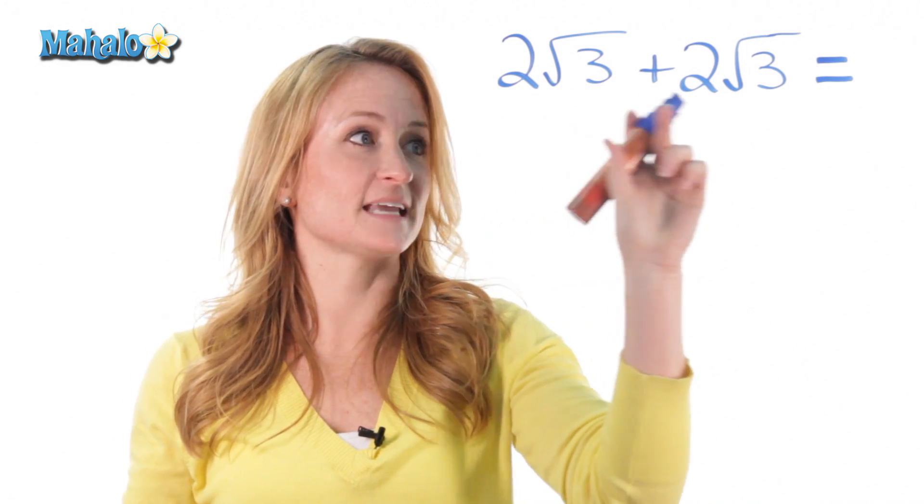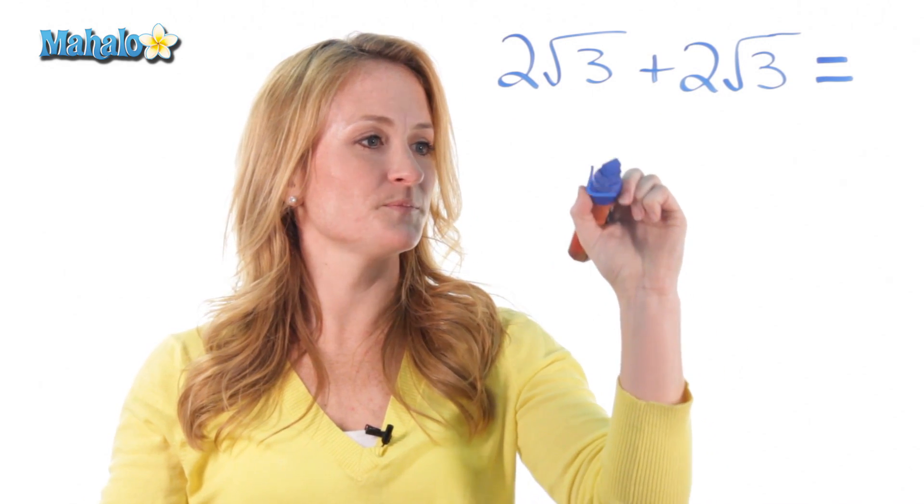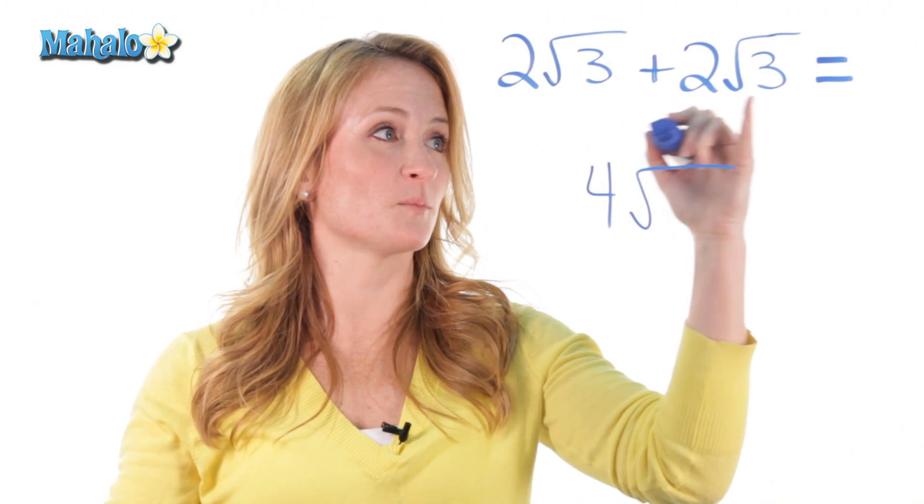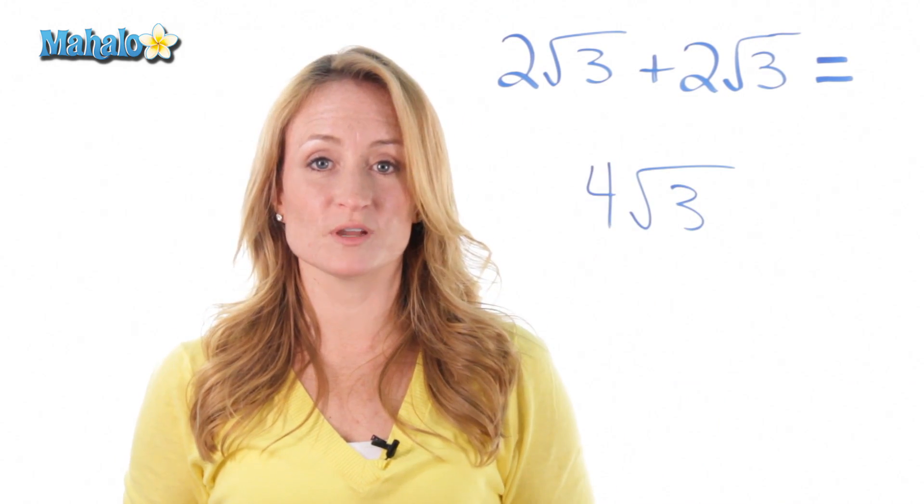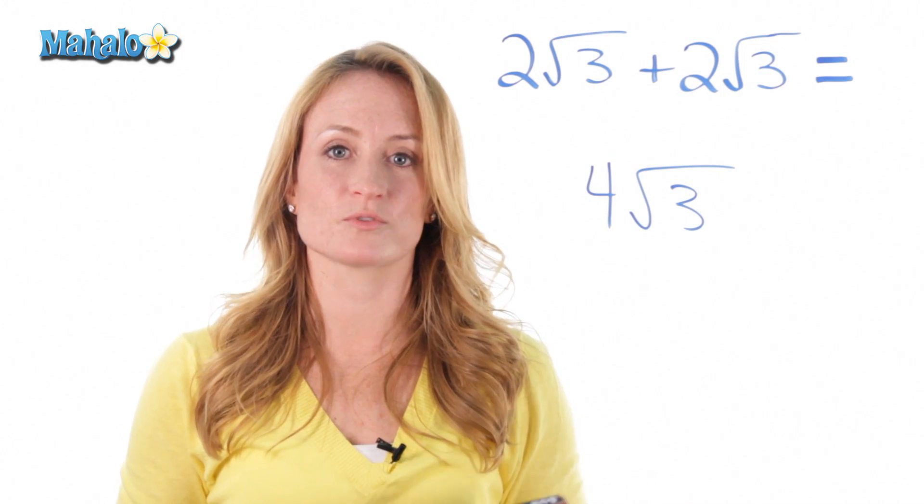All you do to add roots together is add the outside number, so 2 plus 2 is 4, and you leave the inside number as it is, 3. So the answer of 2 root 3 plus 2 root 3 is 4 root 3.